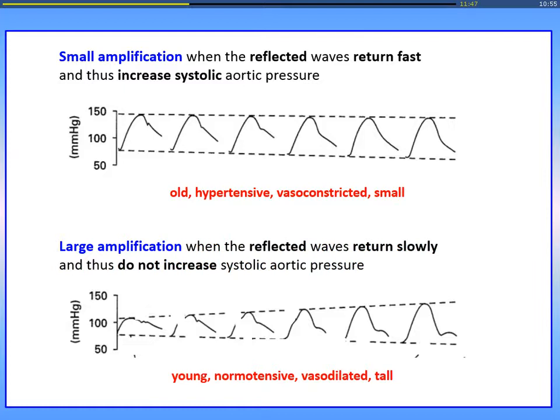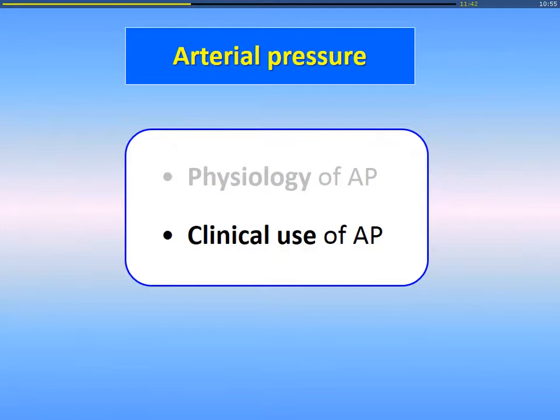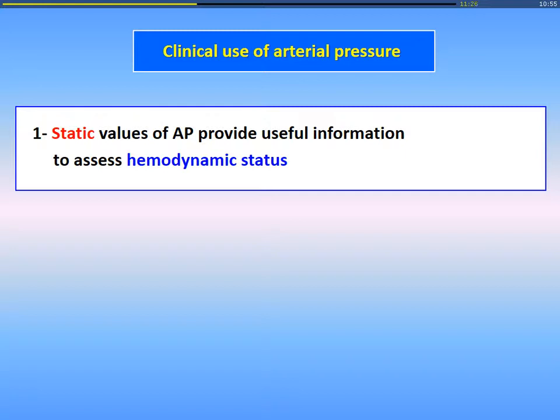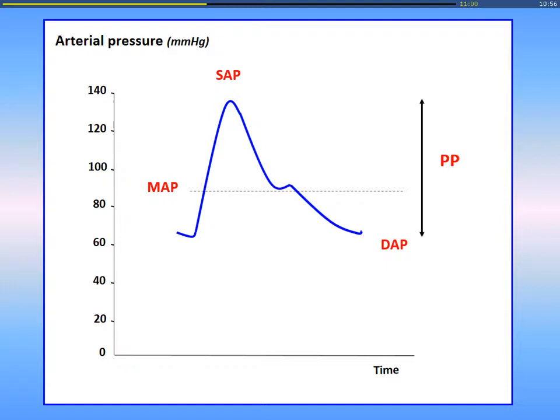Now we can move on to the clinical use of arterial pressure. We can pay attention to static values of arterial pressure — they can provide useful information to assess hemodynamic status. We can pay attention to four values: the systolic arterial pressure, the diastolic arterial pressure, the mean arterial pressure, and the pulse pressure, which is the difference between the systolic and the diastolic pressure. All four values are very important for interpretation of hemodynamic status.